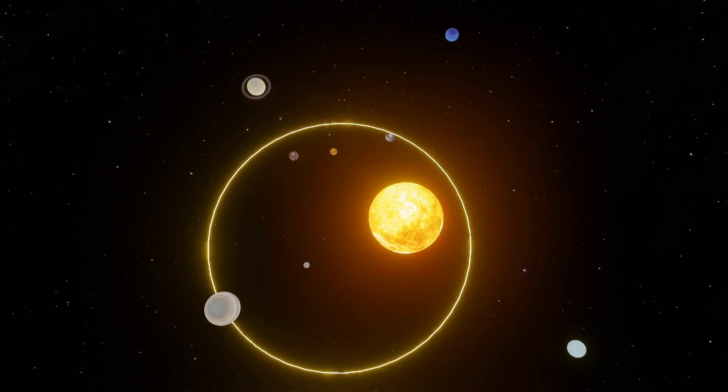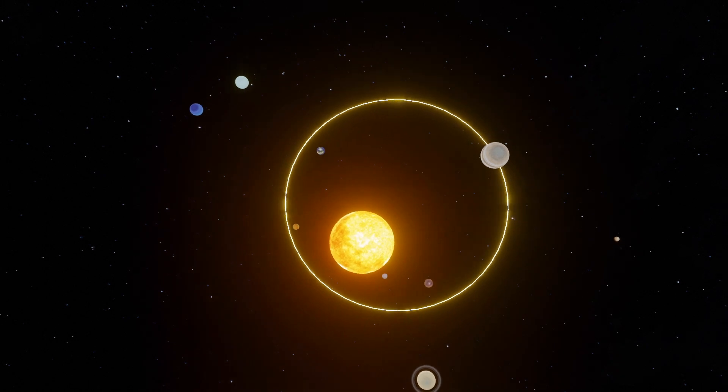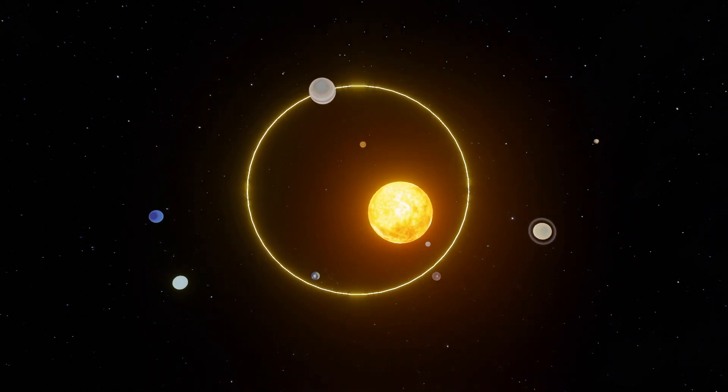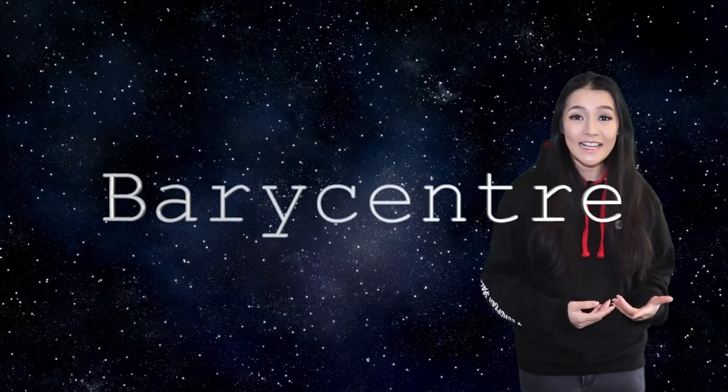In fact there are no planets that really do orbit the center of their host stars. Planets and stars orbit around the common center of mass. This is what is known as a barycenter.